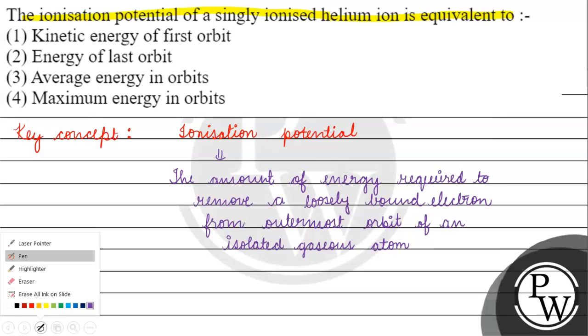Ionization potential is basically when we talk about single electron species, the separation of energy from the first orbit to the last orbit. We take the same direction to infinity, the ionization potential of a single electron species.